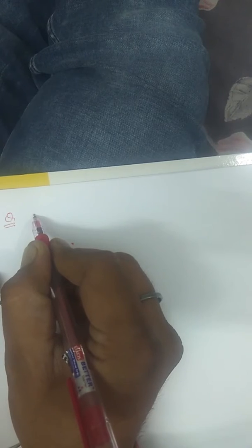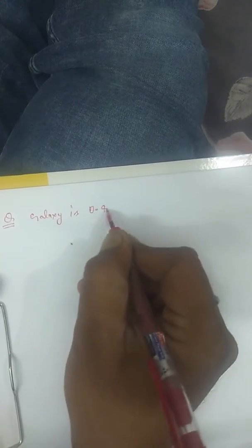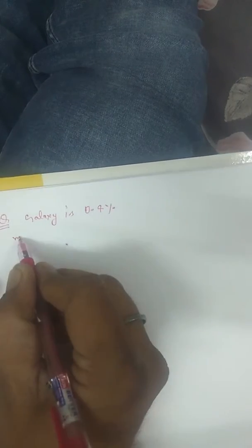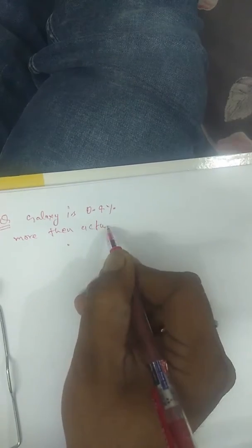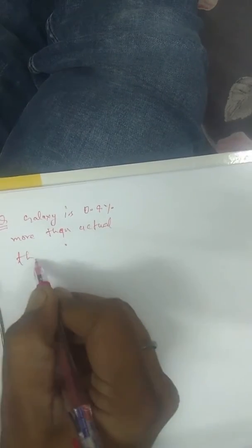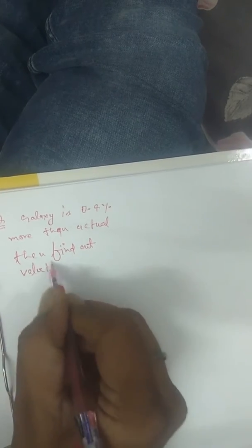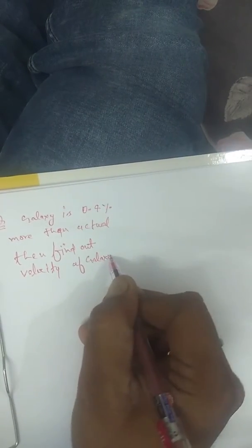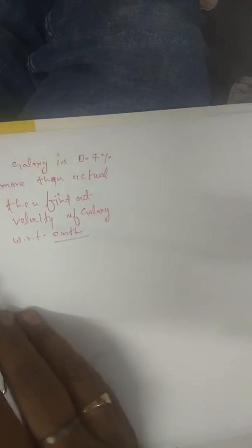One more question about the Doppler's effect in light. What is the question? Light coming from a galaxy is 0.4 percent more than actual. Then find out velocity of galaxy with respect to earth. How can we do this question?